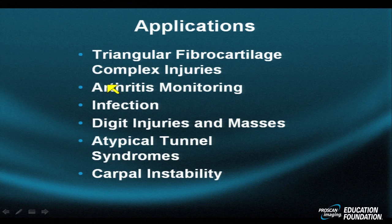Welcome to the Pomerantz Mentor, presented by ProScan MRI Education Foundation. We're going to be covering the wrist — a small part with a lot of anatomic information packed into a small space. Let's get started with something straightforward: the application of MR in the wrist. For primary care physicians and imagers, the most common indication for MR of the wrist is ulnar-sided wrist pain, of which there are numerous causes.